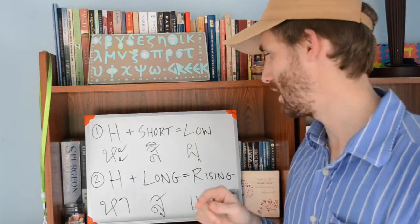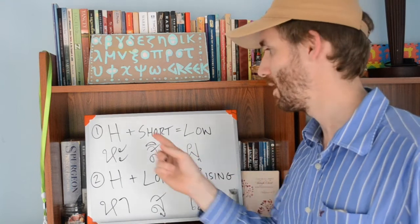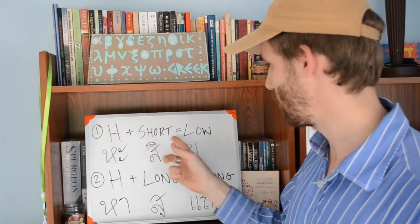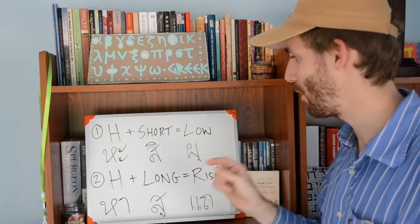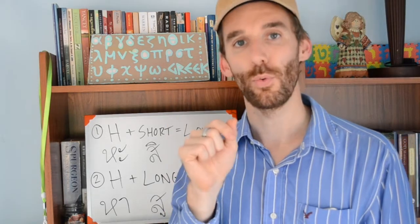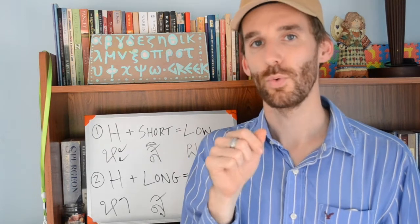And then the last one, this is the letter POPHUNG. POPHUNG fits in the high class category, and then the short vowel is the U sound, the short U. When POPHUNG and the short U come together, they make the sound POPHUNG. Short low tone.